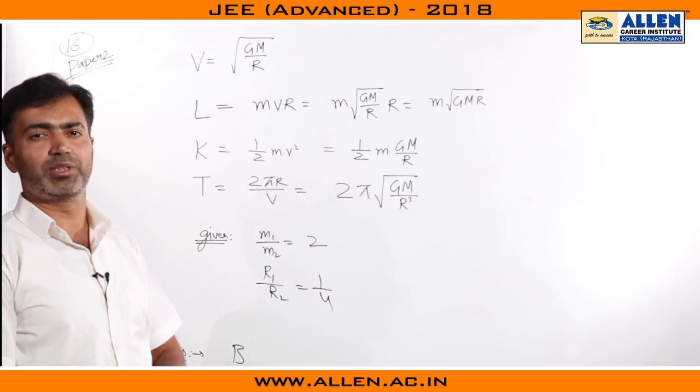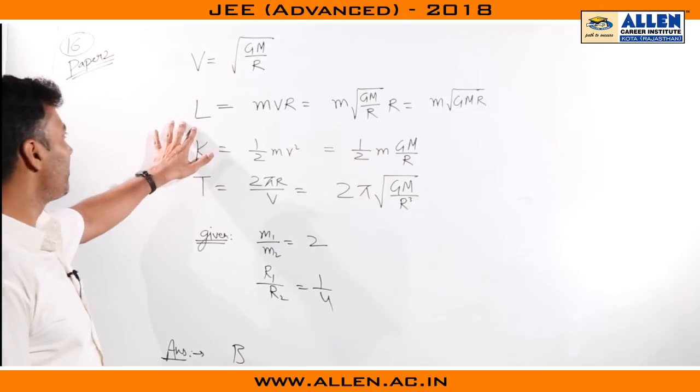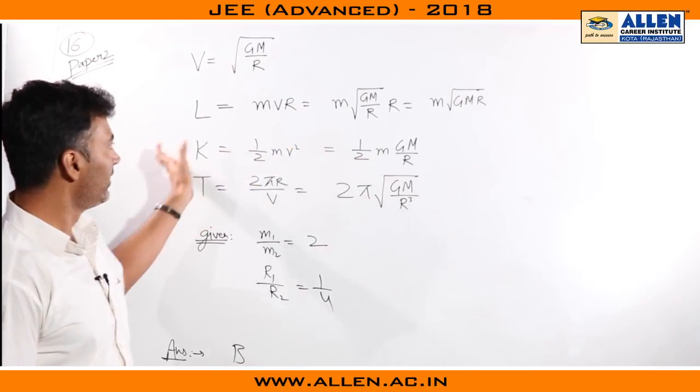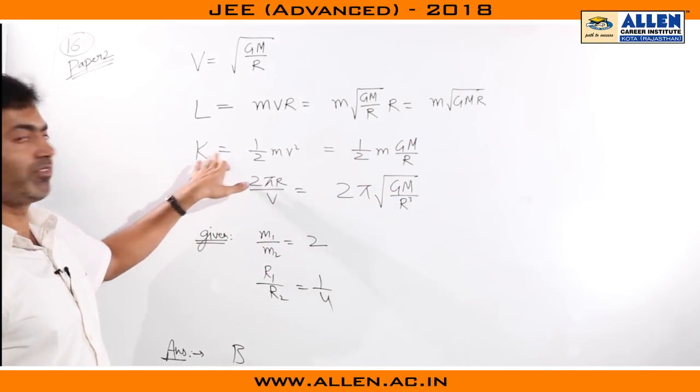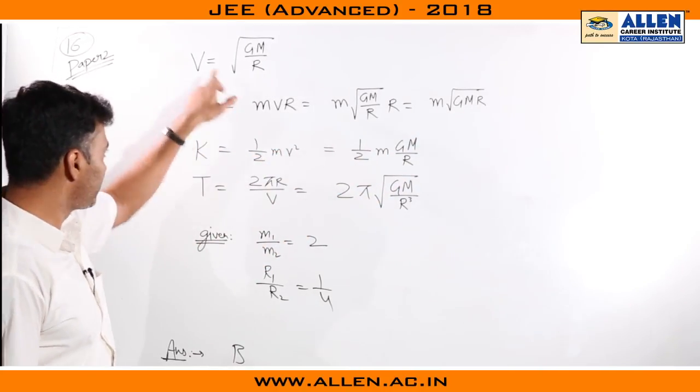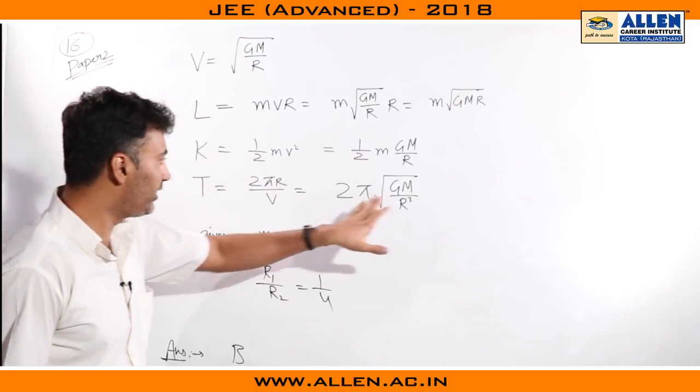This we can calculate using the equation GM₁M₂ by R square equals to MV square by R. Then angular momentum would be MVR rearrange and we get M into root GMR. Kinetic energy will be half MV square replace V this is what we get, time period would be 2πR by V, arrange this is what we get.